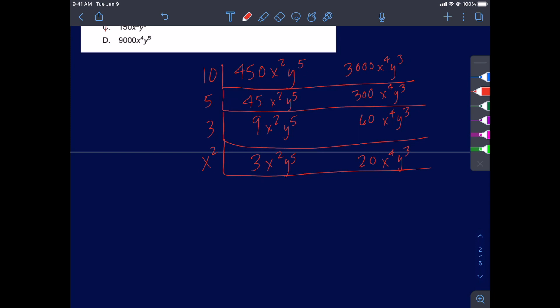So if we divide these terms by x squared, x squared divided by x squared is 1. 1 times anything is itself. So now we have 3y to the 5th. And if we divide 20x to the 4th y to the 3rd by x squared, we're really going to reduce that exponent by 2 using our exponent properties. So now we have x squared y to the 3rd.